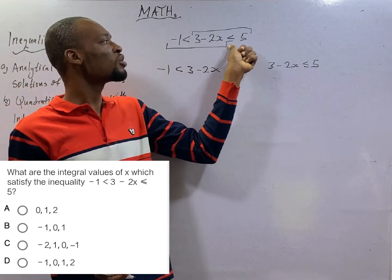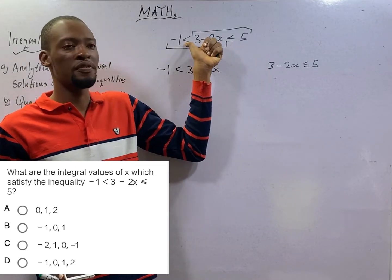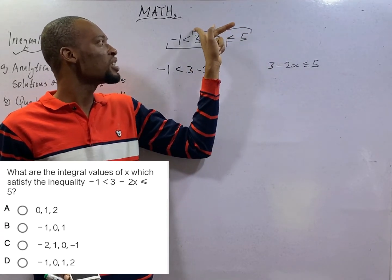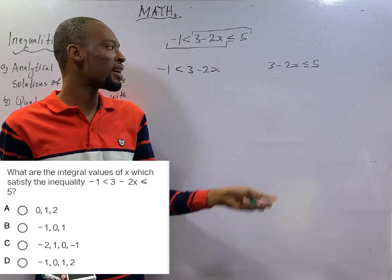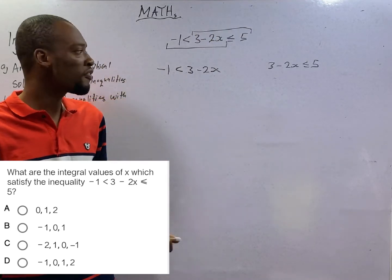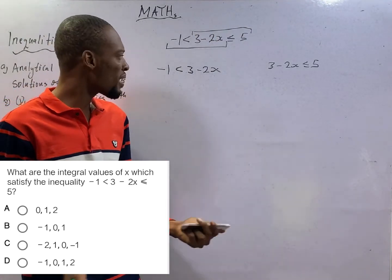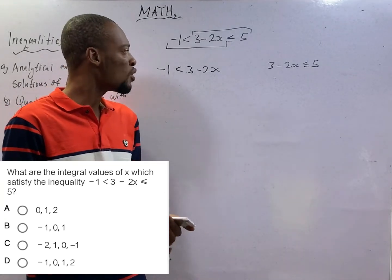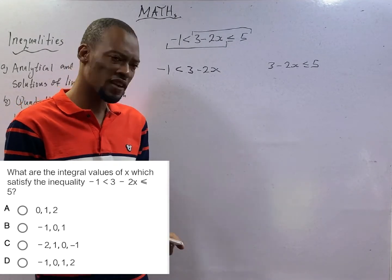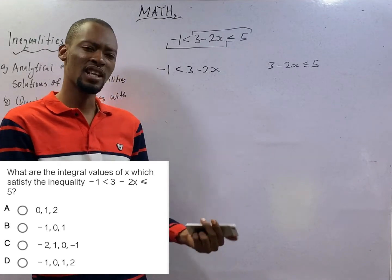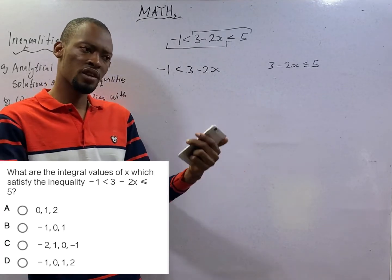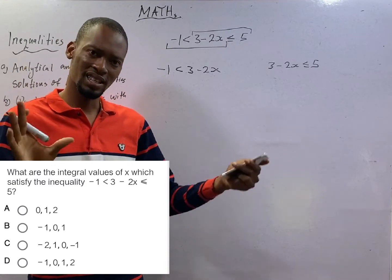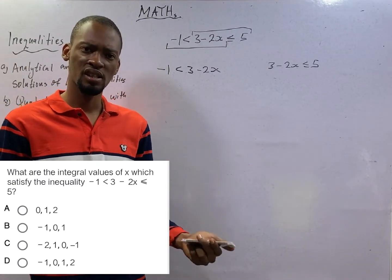Start from the beginning and move to the start of the second symbol, writing out: minus 1 is lesser than 3 minus 2S. Then start from the end and come down to the beginning of the second symbol, writing out: 3 minus 2S is lesser than or equal to 5. Solve them separately. Remember, we solve inequalities exactly the way we solve equations, except that dividing or multiplying both sides by a negative number changes the sign, and changing the order of arrangement also changes the symbol.